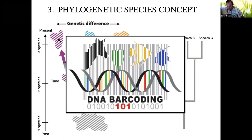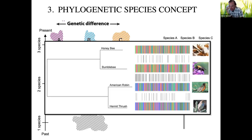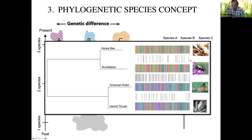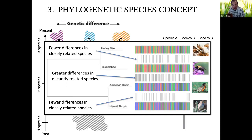This is exactly how DNA barcoding works — you find a region of the genome that exists across many different organisms, sequence the DNA in that piece, and compare how similar or different the sequences are. Different species should have more differences, while closely related species should have very similar sequences. Comparing two bee species should yield fairly different barcodes, while comparing a bee to a bird should show way more differences, and comparing the same species of bee should show very little difference.